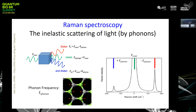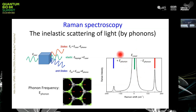The spectrum generally looks like this: at zero — which means the energy of the incoming light — you have a huge intensity, and that's what you want to filter out. Then, shifted up or down in energy, you have the Stokes and anti-Stokes components. The anti-Stokes component is always lower because the probability of destroying a phonon is lower than the probability of creating one.